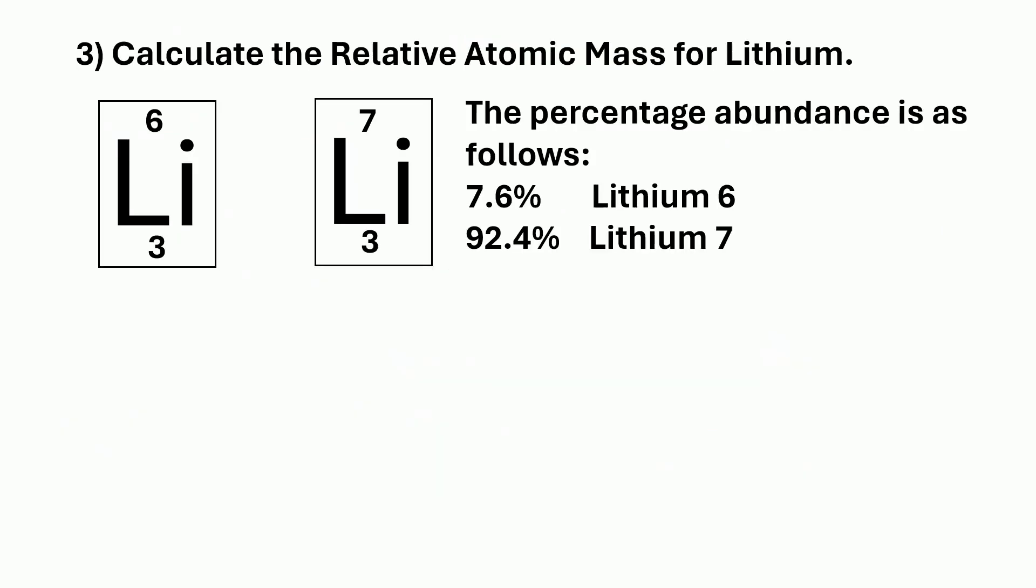Question three, calculate the relative atomic mass for lithium. So we've got to remember the relative atomic mass is an average for all isotopes of lithium. So it's going to be a number that is somewhere between six and seven. And in the question, they will always give you the percentage abundance. And for lithium, it tells us in the question that for lithium 6, the one with the mass number 6, there's an abundance of 7.6%. So 7.6% of a sample of lithium is that type. And there's 92.4% of lithium 7 with the mass number 7.